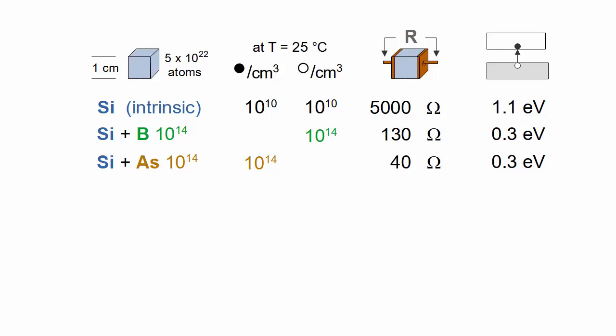At 10 to the 16 dopant atoms per cubic centimeter, the resistance is around 1 ohm. This is still less than 1 dopant atom per million silicon atoms.